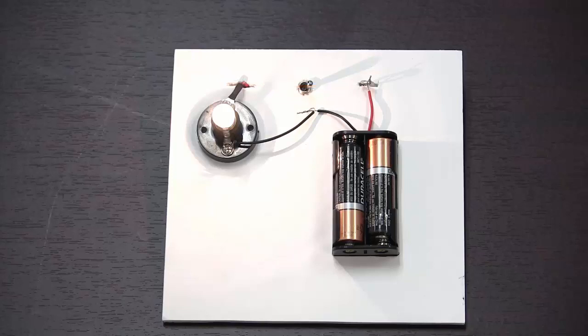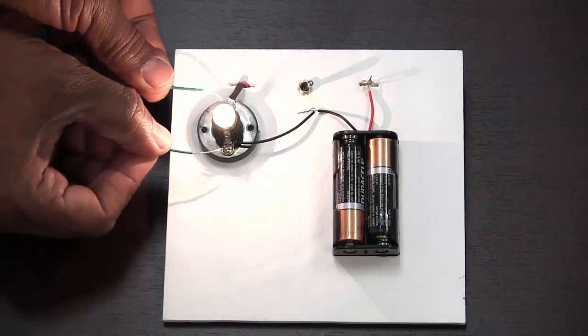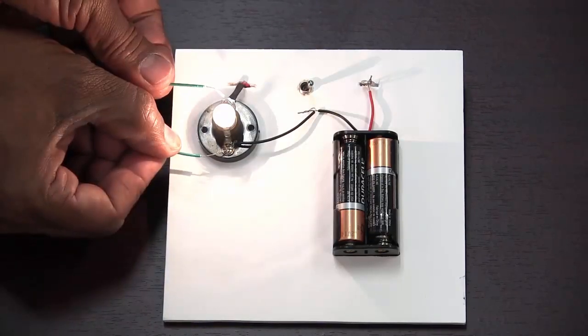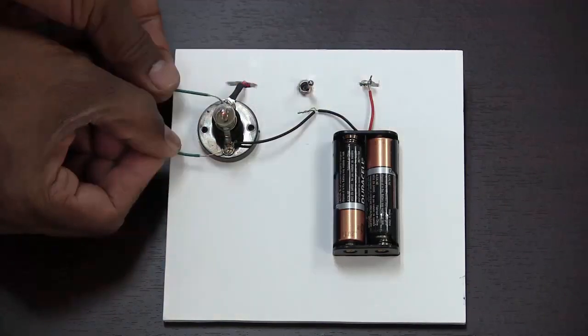What happens when I take another wire and connect the two battery terminals directly? By connecting the two battery terminals, I am creating a short circuit and the bulb turns off.